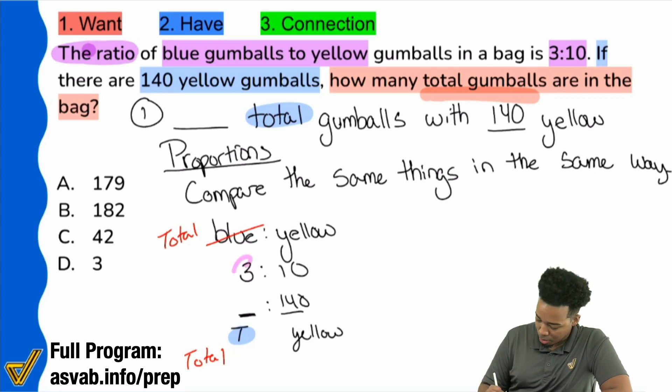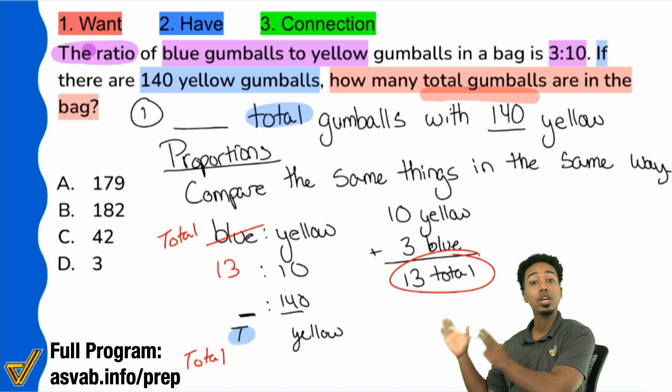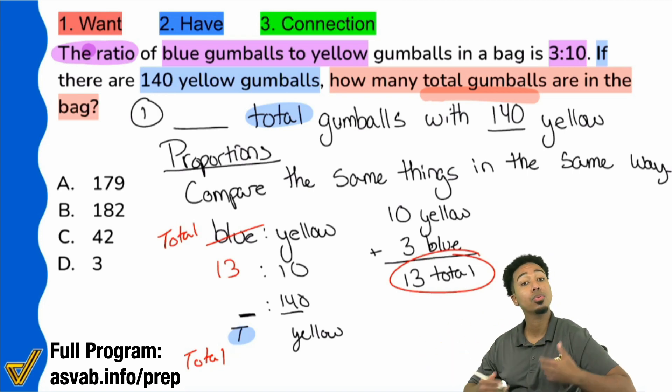But if you think about how do we get to a total, it's going to be by adding things up. So if we wanted to write this proportion correctly, we need to make sure that this right up here is not blue. We need to make sure that it's the total. That way we have total and total lined up and then yellow and yellow lined up. Total just means add it up. If we have 3 parts blue and 10 parts yellow, what's 3 plus 10? That's going to be 13. We have 10 yellow, 3 blue. If we add that together, that's 13 total parts. So we'll replace the 3 right here with 13.